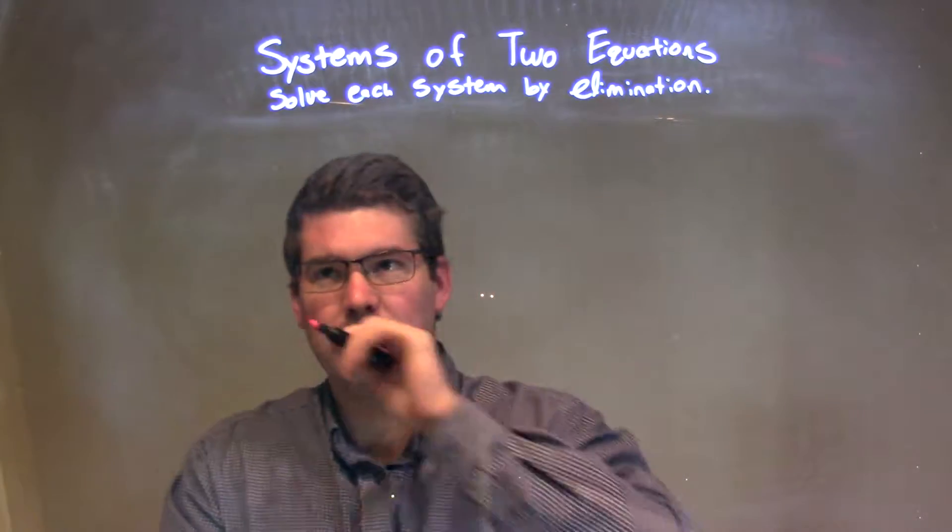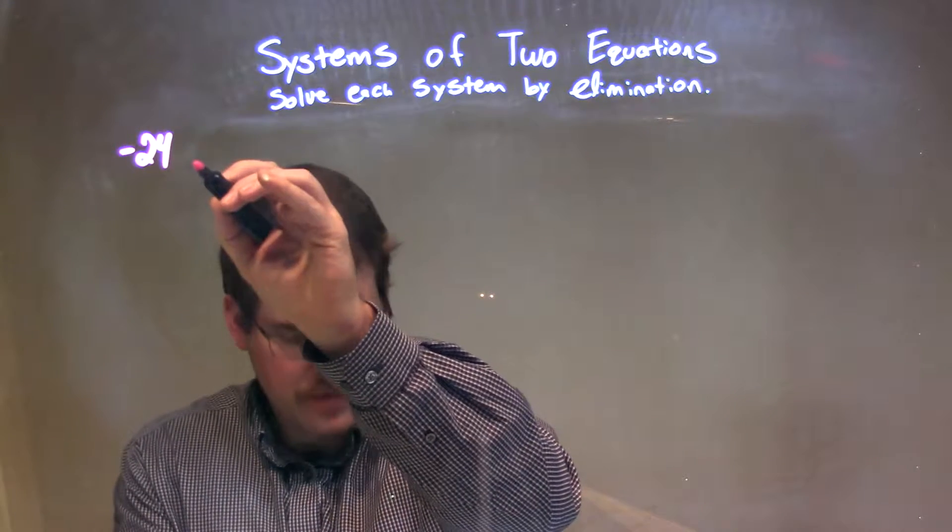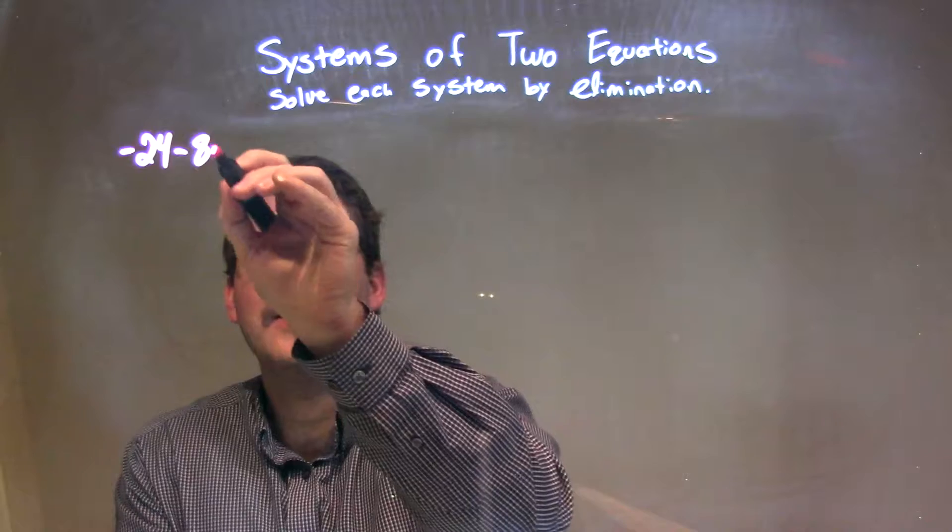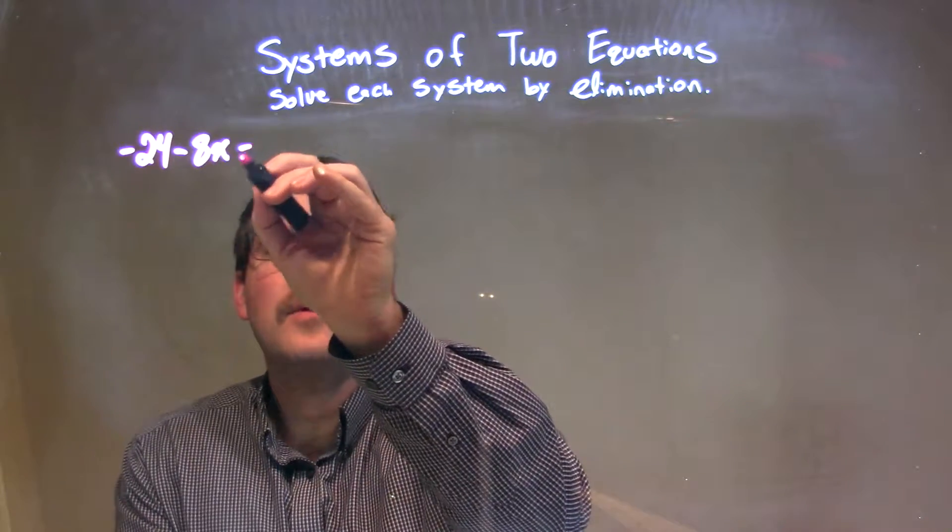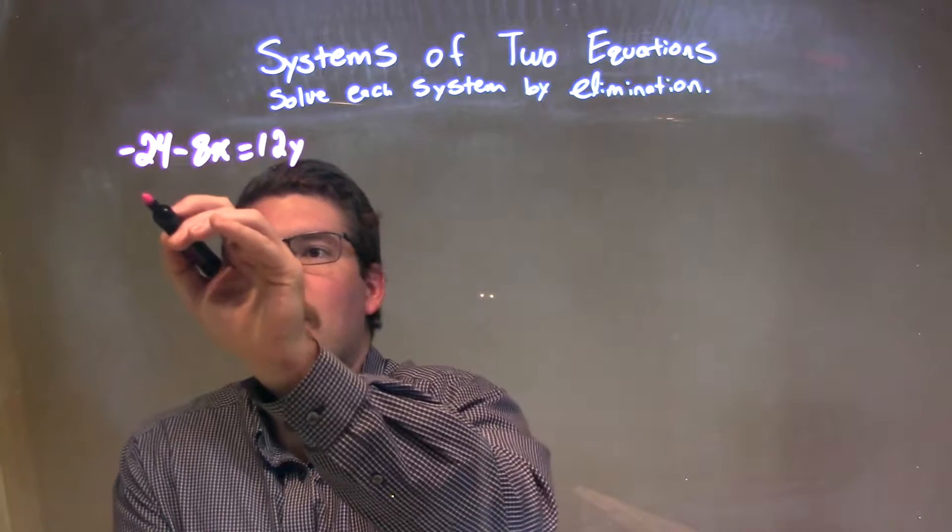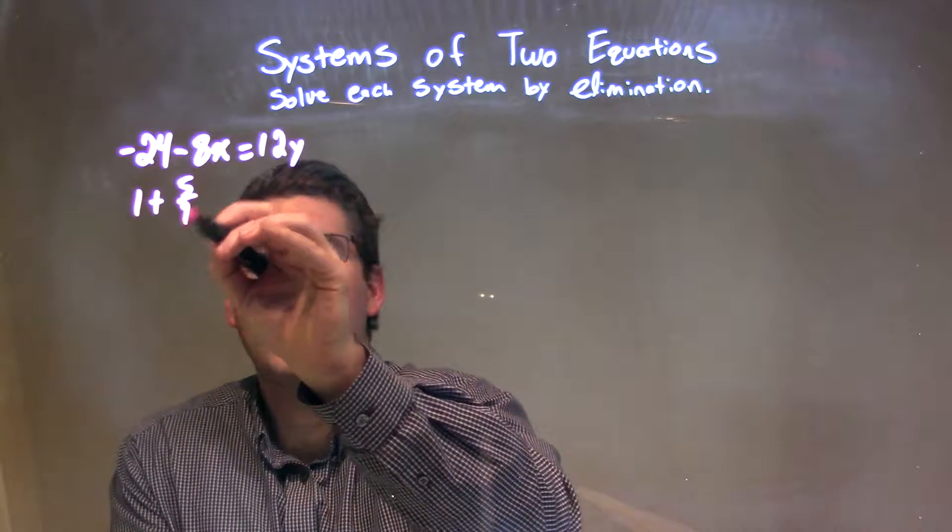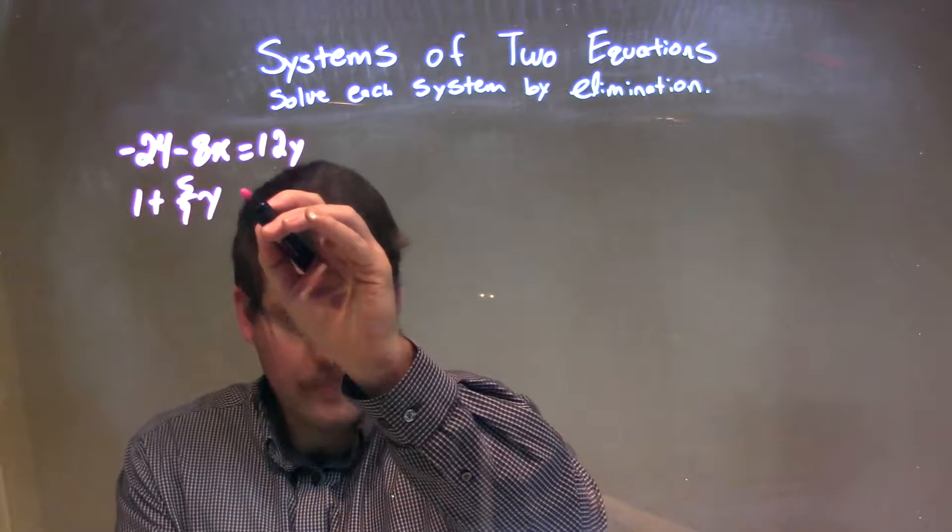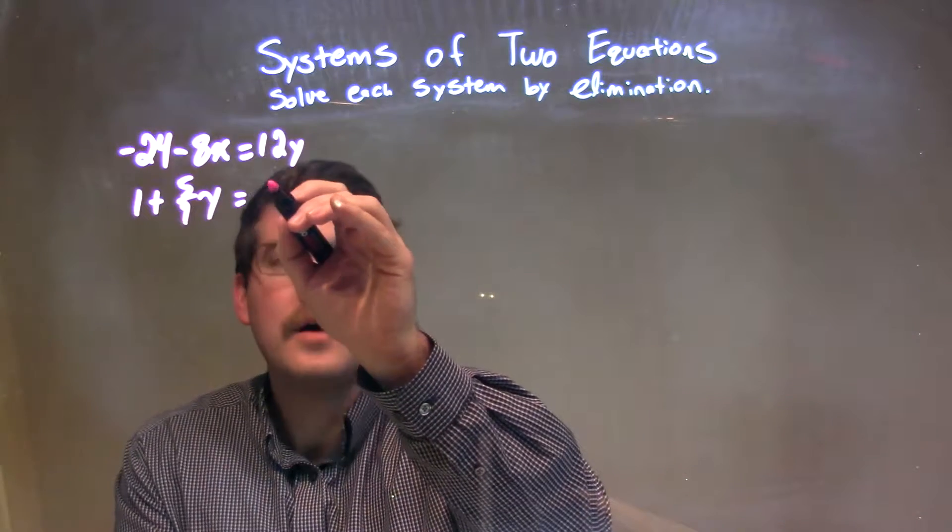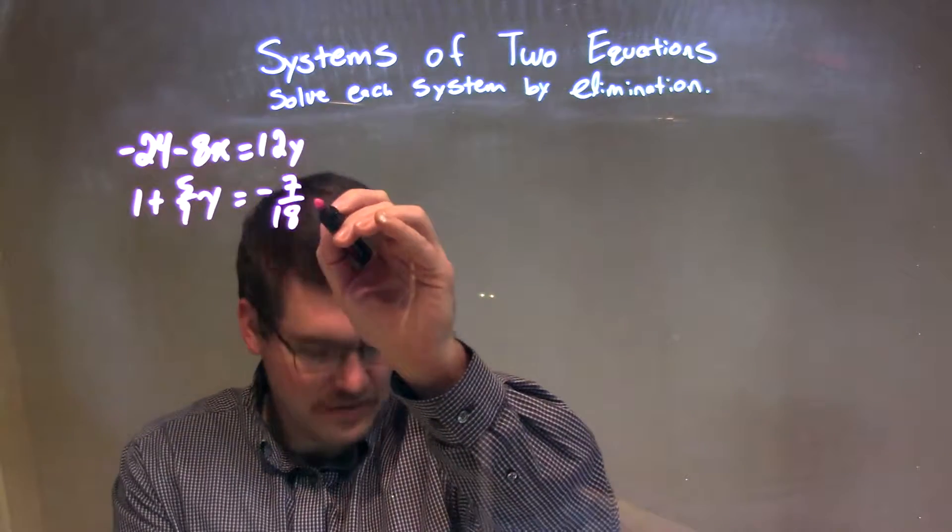If I was given this one, this is a tricky one. So, negative 24 minus 8x equals 12y, and then I have 1 plus 5 ninths y equals negative 7 eighteenths x.